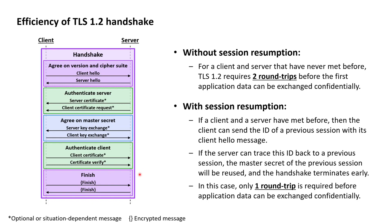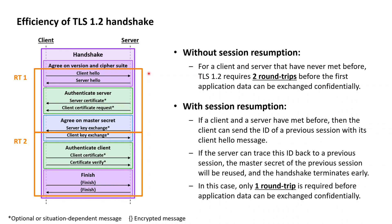What we can see in this drawing is the handshake as it takes place between a client and a server that have never met before and as such can't conduct a session resumption. If we look at how many round trips of messages there are in such a handshake not making use of session resumptions, we can see that the first round trip starts with the client hello message sent from the client to the server and lasts down to the server key exchange message. This is followed by a second round trip starting with the client key exchange message, lasting to the finished message sent from the server back to the client. So a full TLS 1.2 handshake for a new TLS session consists of two round trips.